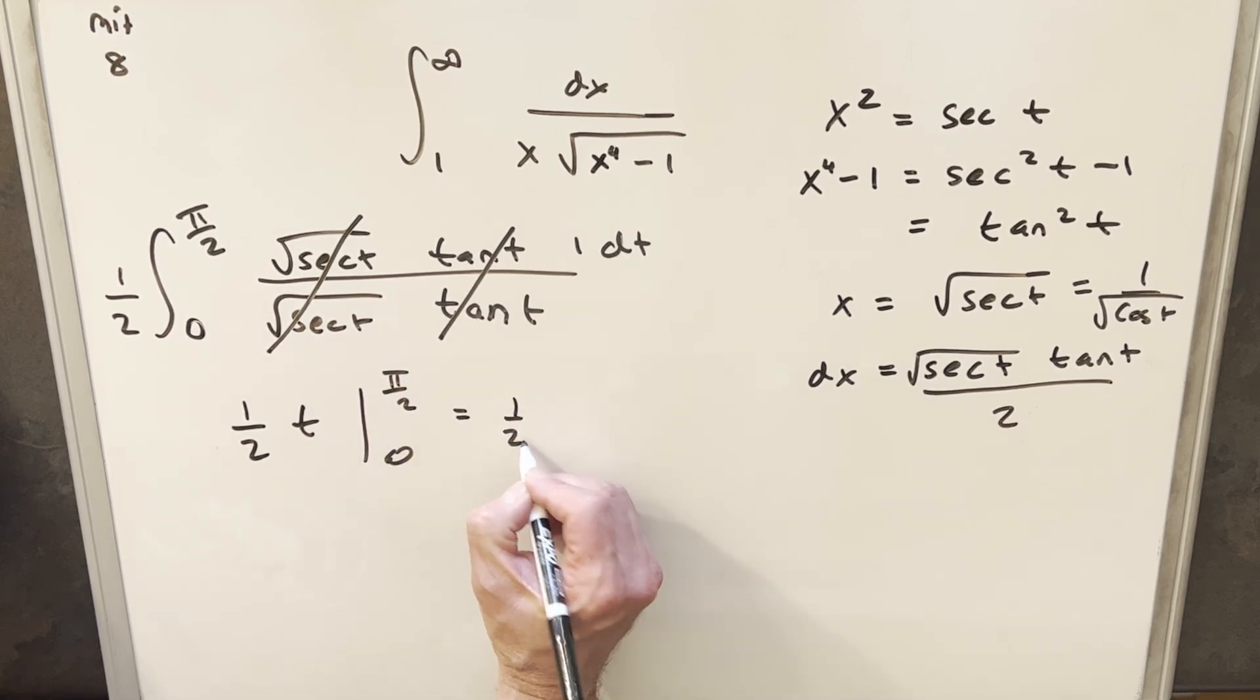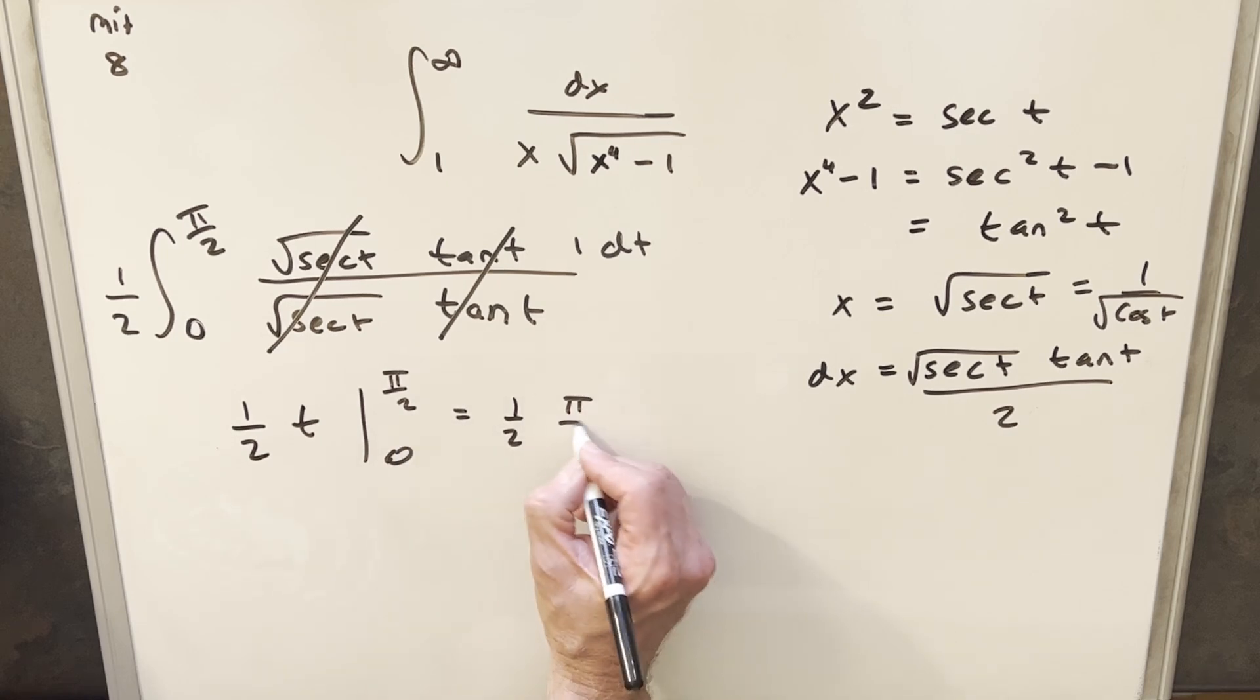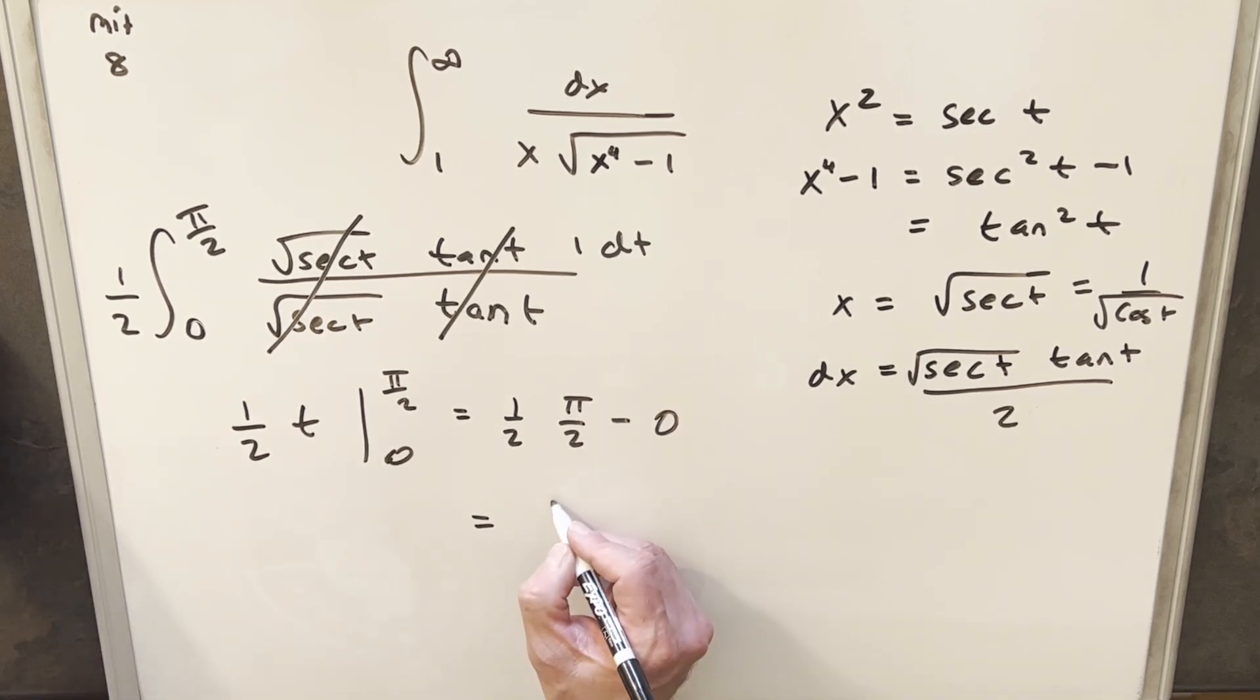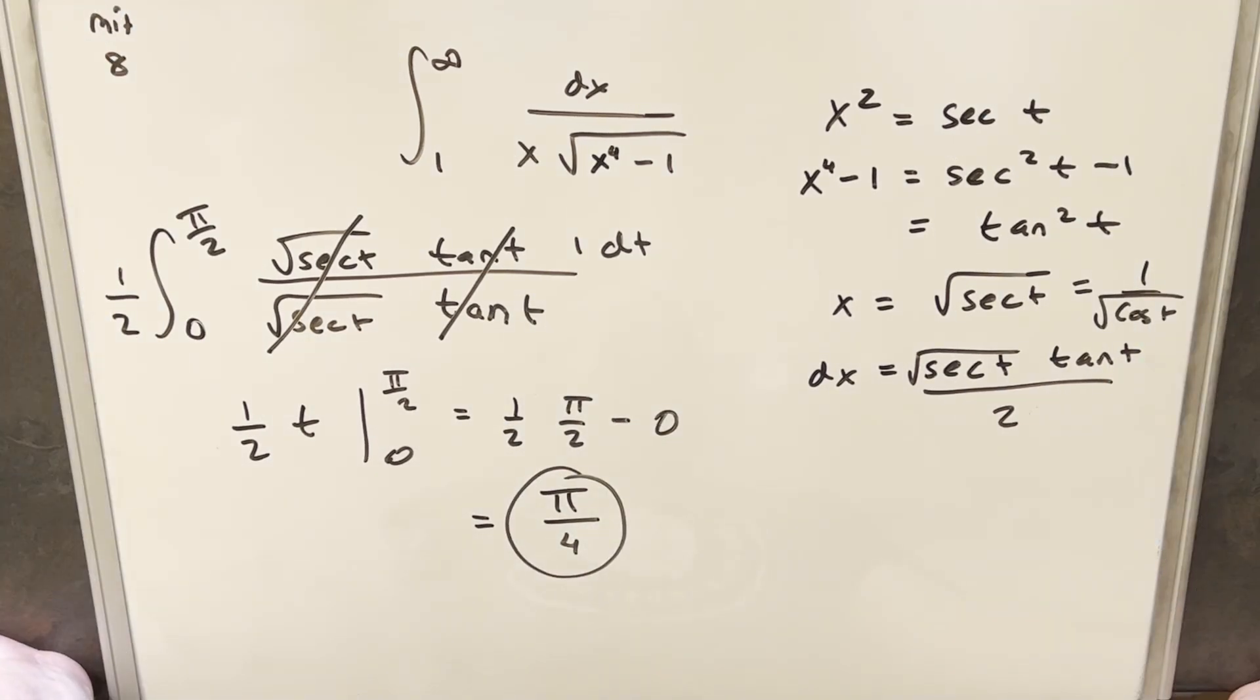Plugging that in we're going to have 1 half times pi over 2 minus plugging 0, it's just going to be 0. So for our final answer here our final solution is just going to be pi over 4. So there you have it. Just a quick trig substitution and everything's simplified pretty fast. So we'll stop it there. Thanks everyone for watching. Have a great day.